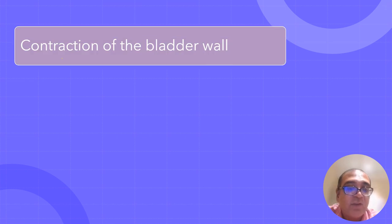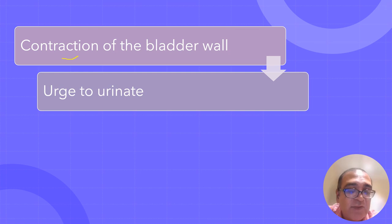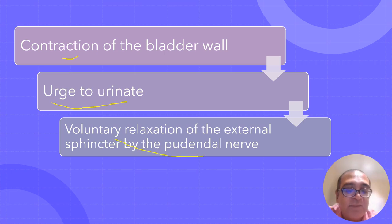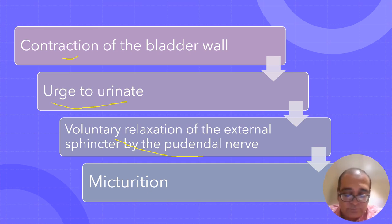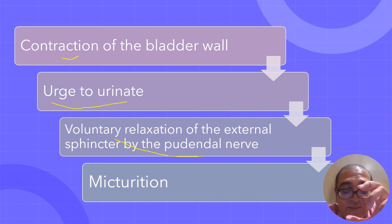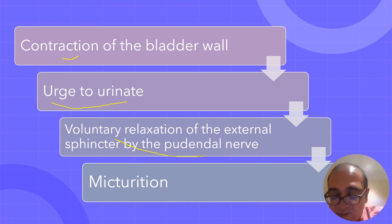As a result of contraction of the bladder wall — specifically contraction of the detrusor muscle — there is an urge to urinate. Whether one actually passes urine depends voluntarily on the person. If there is voluntary relaxation of the external sphincter, then micturition or urination occurs. The final urge to urinate depends on voluntary control, and if one finds a suitable time and place, one relaxes the external sphincter — that is how micturition takes place.